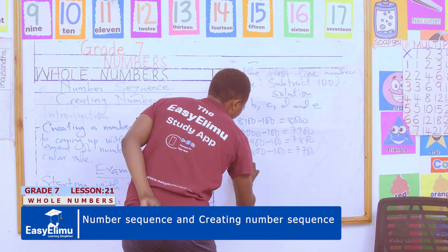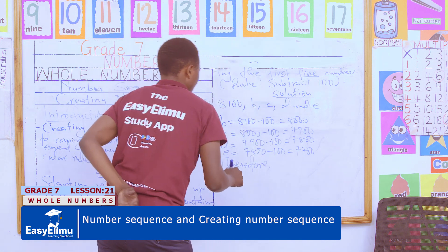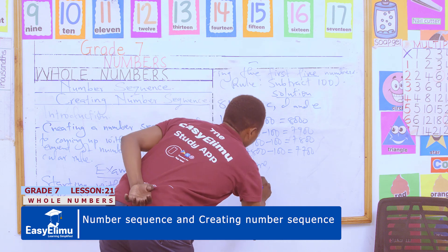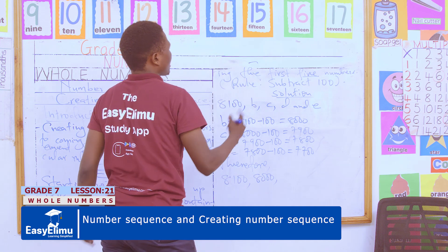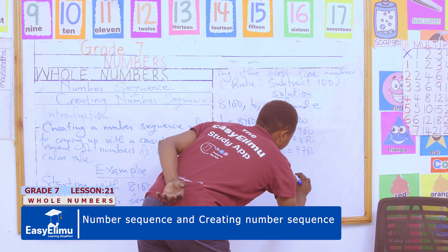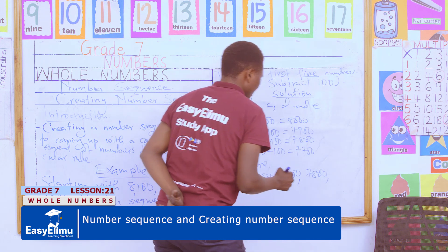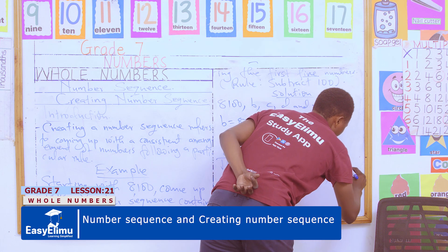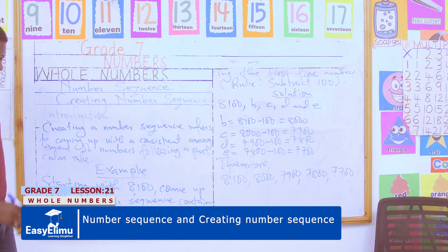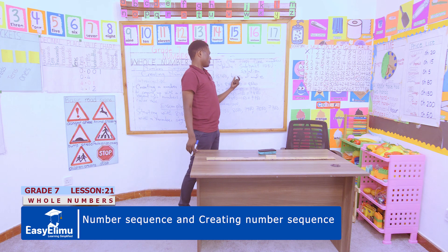Therefore, my number sequence becomes: 8,100 — 8,000 — 7,900 — 7,800 — and finally 7,700. So by doing this, I have come up with the number sequence following the rule as given by the examiner.